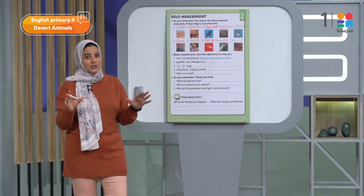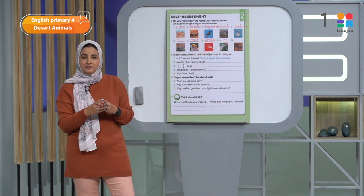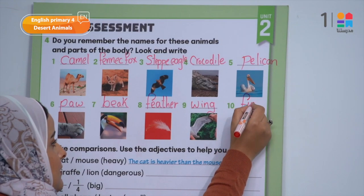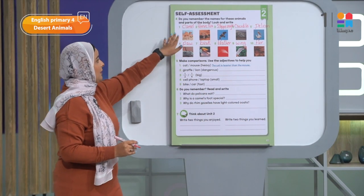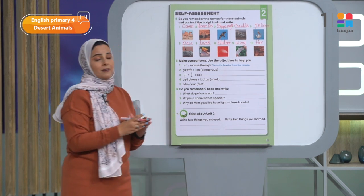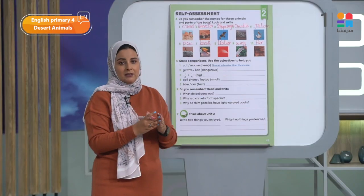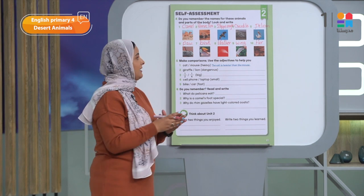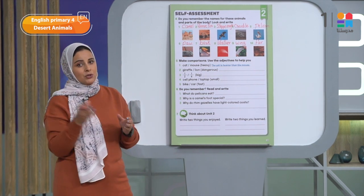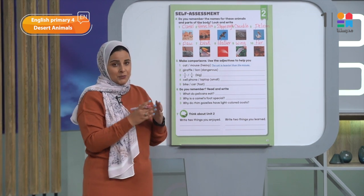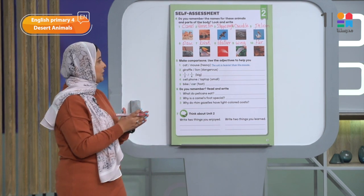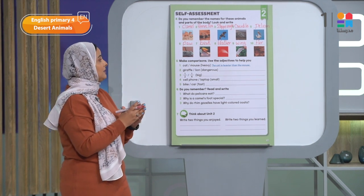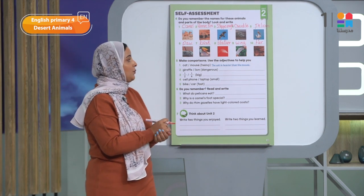Let's revise the words one more time: number one — camel; number two — fennec fox; number three — steppe eagle (the E at the end is silent, so it's 'step' like the word 'step'); number four — crocodile, a very dangerous animal; number five — the pelican from our story; number six — paw (animals have paws, not hands); number seven — beak; number eight — feather; number nine — wing; number ten — fur.